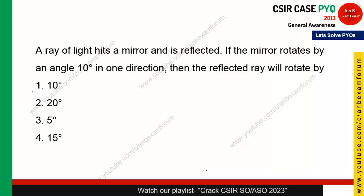Students, don't think about 10 degrees — that answer is wrong. This is not the angle of incidence. We know angle of incidence is equal to angle of reflection, but here the mirror itself is rotated by 10 degrees. So those who are thinking of 10 degrees are wrong. Let's see what the correct answer is and the logic behind it.